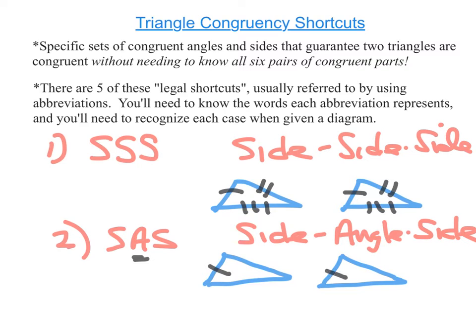So for instance, this side could be congruent to this side, this side could be congruent to that side, but now the angle has to be the one situated between the two sides I've already marked. So that angle could be congruent to that angle right there.